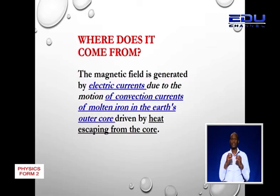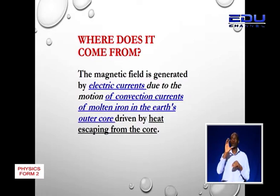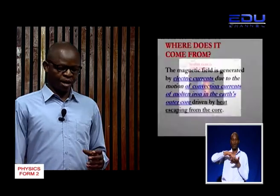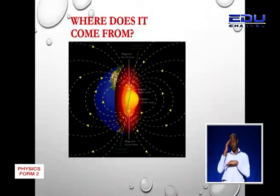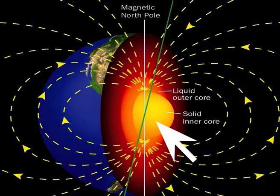So where does this magnetic field come from? The magnetic field is generated by electric currents due to the motion of conventional currents of molten iron in the earth's outer core, driven by heat escaping from the core. The earth has a solid inner core which is very hot, and that heat melts the outer core which contains iron. Heat is transferred by convection currents in liquids, so the iron moving in conventional currents in the outer core generates the earth's magnetic field.